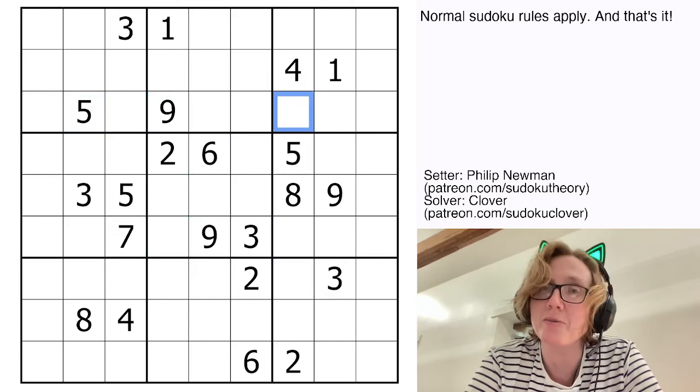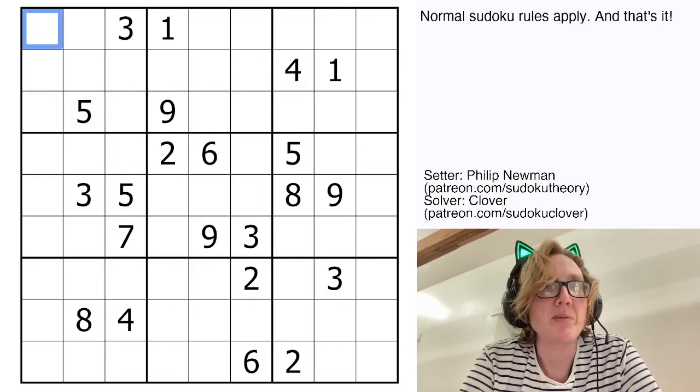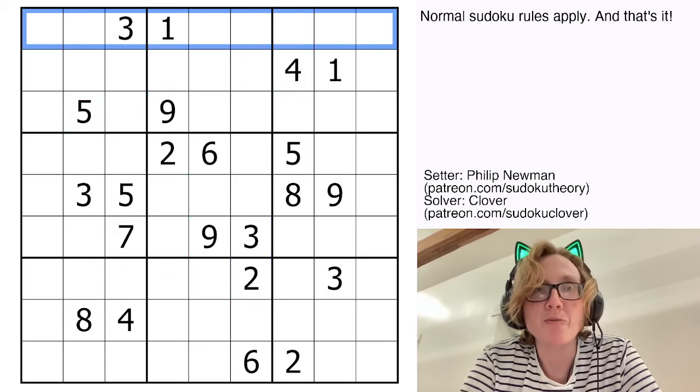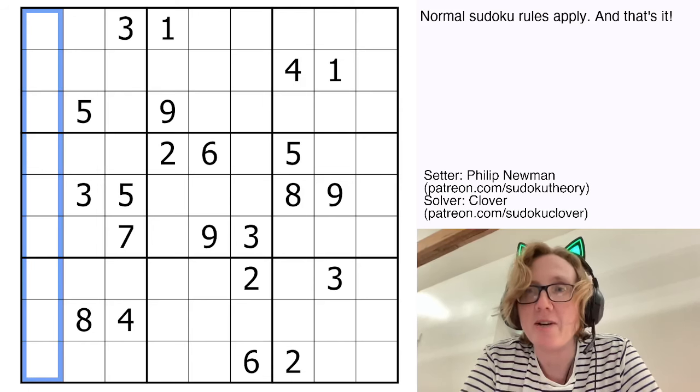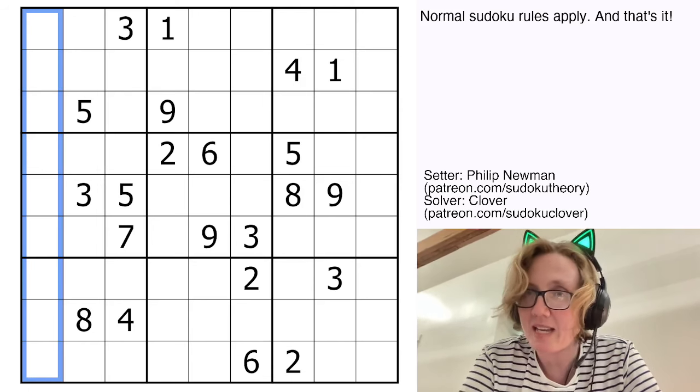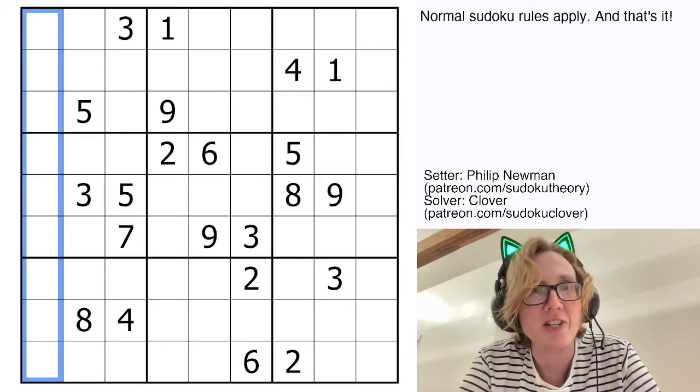So normal Sudoku rules and nothing else here. So we're placing the digits 1 through 9, once each in each row, each column, and each outlined 3x3 region. And that's it. Philip's given us a straightforward one today, so let's check it out.